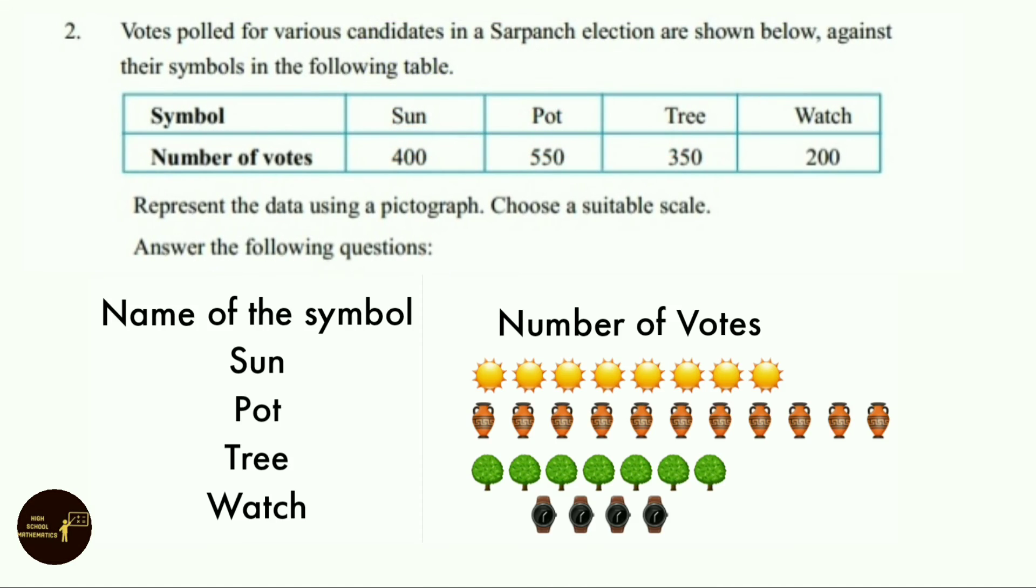Let us see the solution. Sun symbol had 400 votes, so we represented them with 8 sun symbols. Pot symbol had 550 votes, so we represented them with 11 pot symbols.